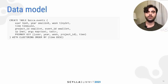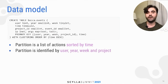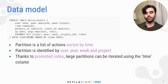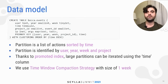Here is how the column family looks. Every partition is a list of actions sorted by time, and every partition is identified by user, year, week, and project — so we split all users' data into buckets by weeks. Partitions can be quite large, but thanks to the promoted index, even large partitions can be iterated quite fast. We use the time window compaction strategy with a window size of one week, which gives us pretty good write amplification.